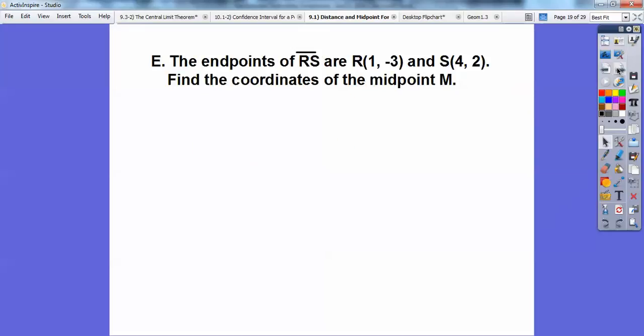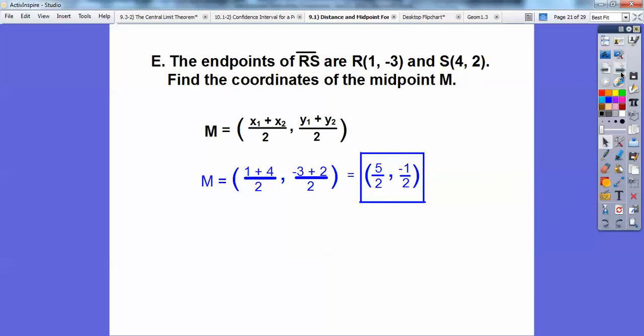So the endpoints of RS are 1, negative 3 and 4, 2. Find the coordinates of the midpoint. So I'm just going to add 1 plus 4, which is 5, 5 over 2. And negative 3 plus 2 is negative 1 over 2. So there we go, and I get 5 halves and negative 1 half. Nice and easy, right?